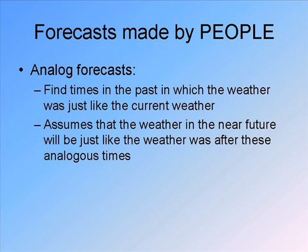Another type of forecast that people can make is what we call an analog forecast — analog as in analogy. When we are making an analog forecast, what you do is find situations in the past that looked a lot like the current weather does, and then you assume that the weather in the future will look like the weather was after those analogous times.